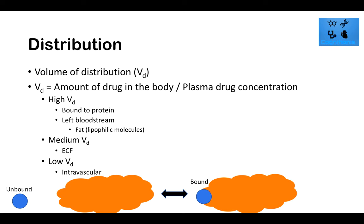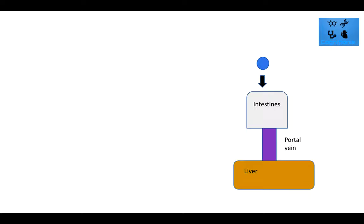The amount of drug bound to protein can be altered by disease. For example, liver disease causes decreased albumin production. Since albumin is the largest protein concentration in the bloodstream, less albumin means less drug binding, causing more drug to be in the unbound form. Kidney disease can also play a role in this process.